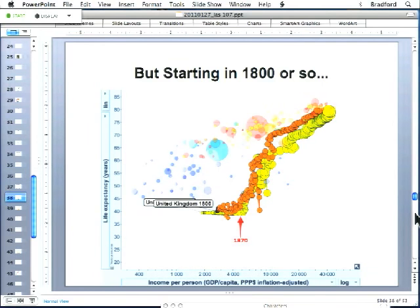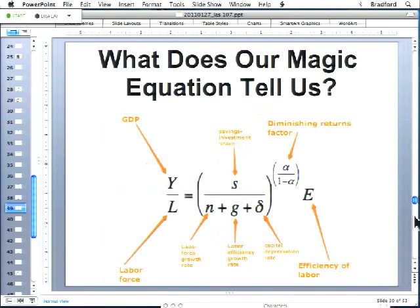What does our magic equation tell us about this 20-fold increase in output per capita in the United States over the past two centuries? Over that period you also have population growth n in the United States down from 3% to 1% per year. A country with slower population growth should be richer, because this n is in the denominator—if your population growth rate is lower, capital intensity will be greater and the economy more prosperous.